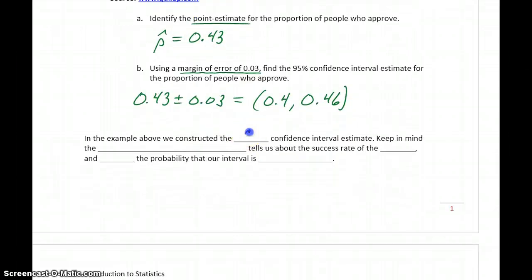In this example, we constructed the 95% confidence interval estimate. But we want to keep in mind that that confidence level of 95% tells us about the success rate of the method that we're using, and we want to be very clear, not about the probability that our interval is correct.